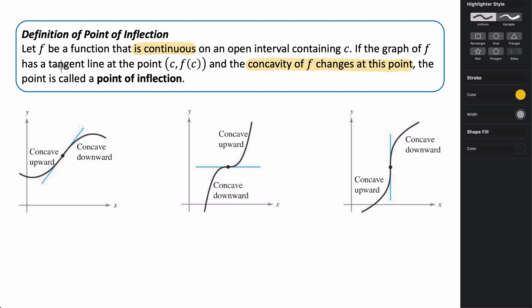This part is important: the graph has to have a tangent line at the point. In order for a point of inflection to exist, the original function has to be defined at that point. Also, there has to be a tangent line, so you can't have something like a sharp point. You can have a vertical tangent line — the derivative could still be undefined there — but you can't have a hole, a discontinuity, or a sharp point, because then the tangent line does not exist at that point.